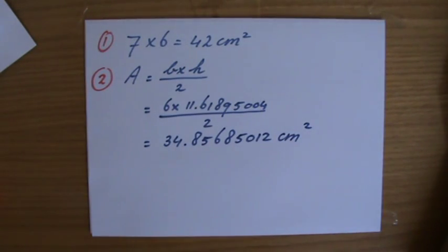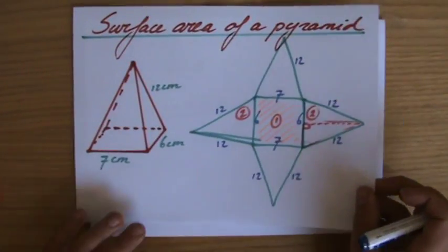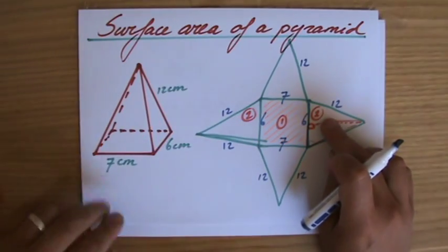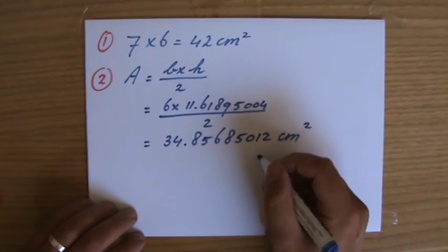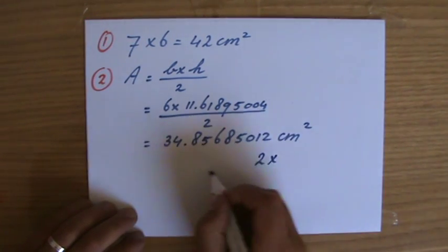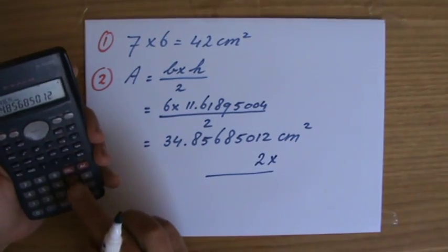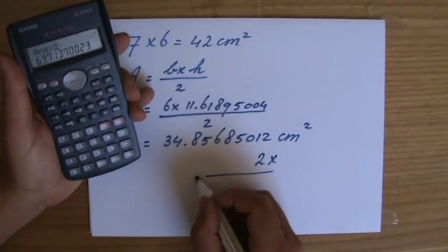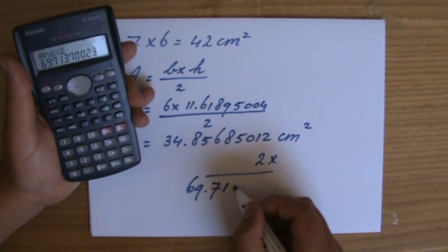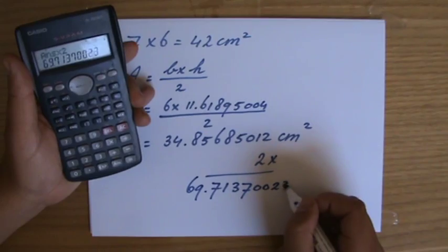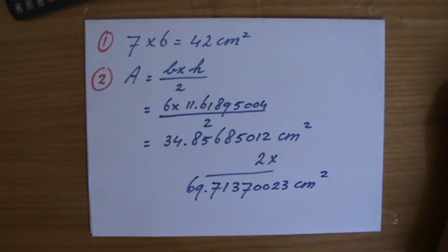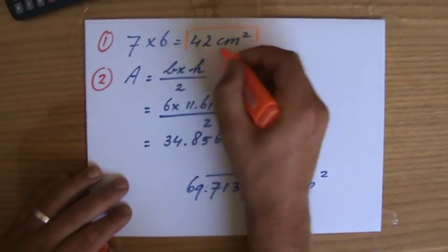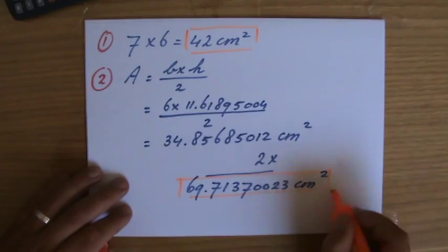So, that is a triangle, but I have two of them. So if I go back to my net, I have one here, and that one is exactly the same, and so I have two of them. So, let me write down times 2. So I do times 2, that answer, and that is 69.71370023 centimeters squared. You see, that is quite a lot of calculations. This is my base, and these are two of my triangles.